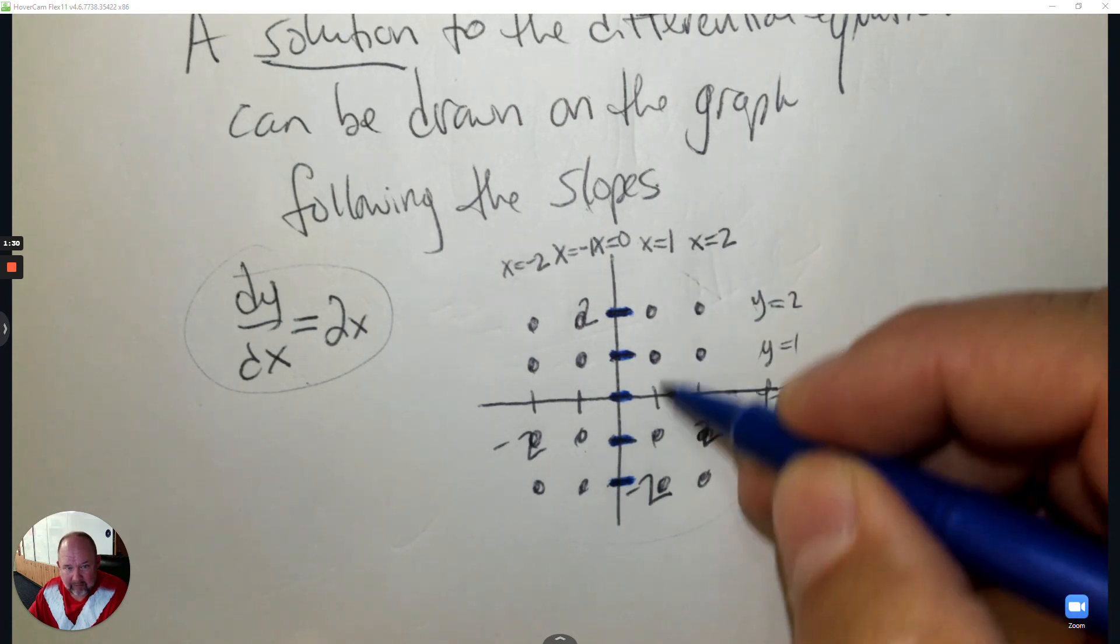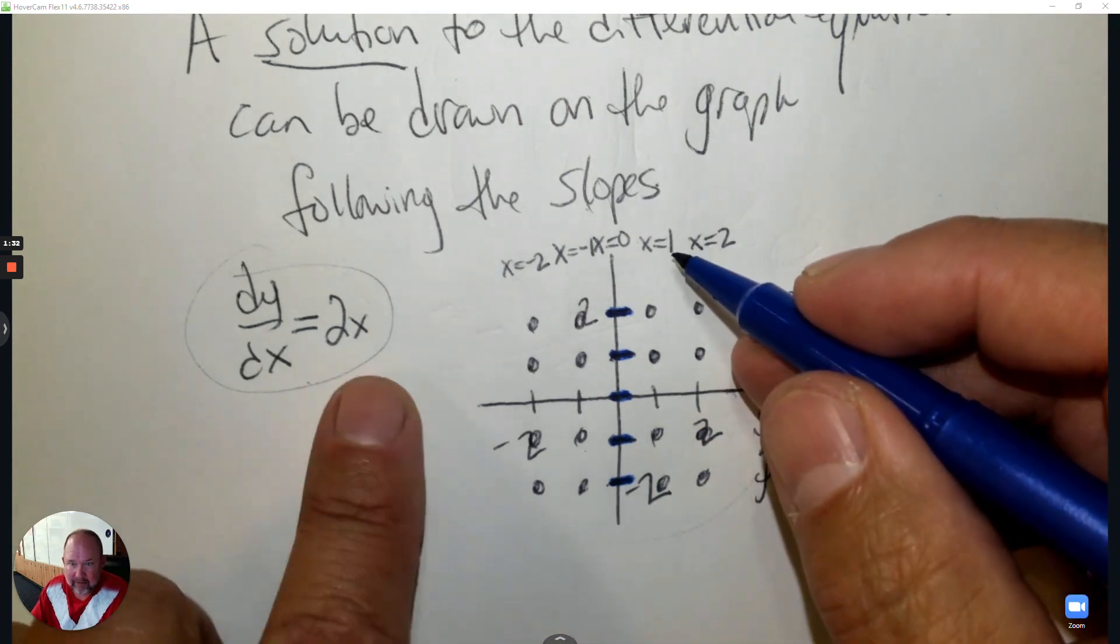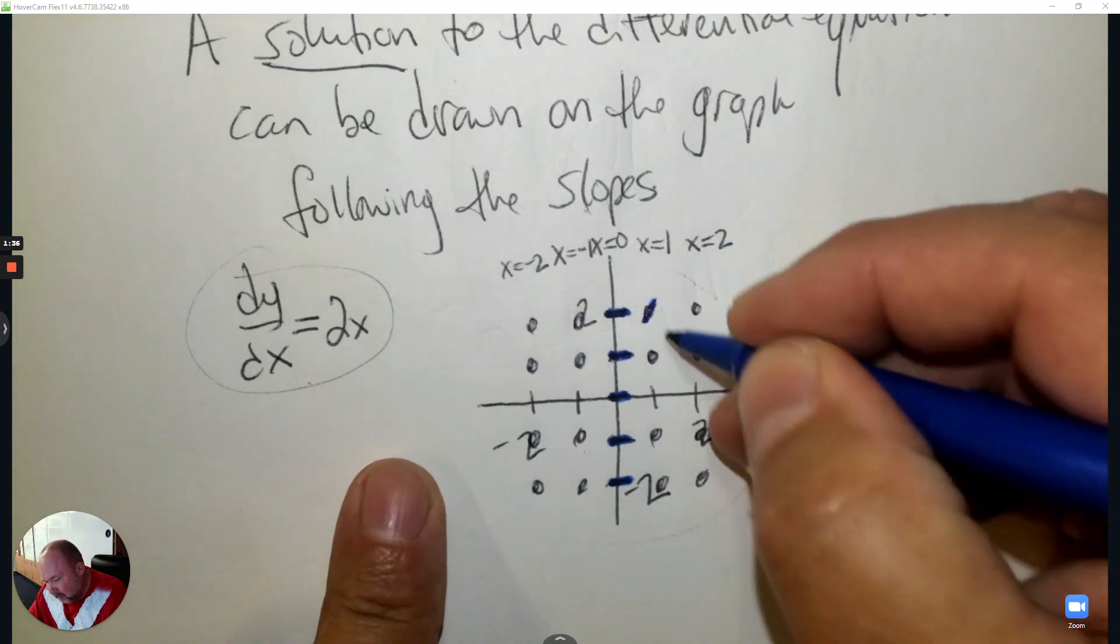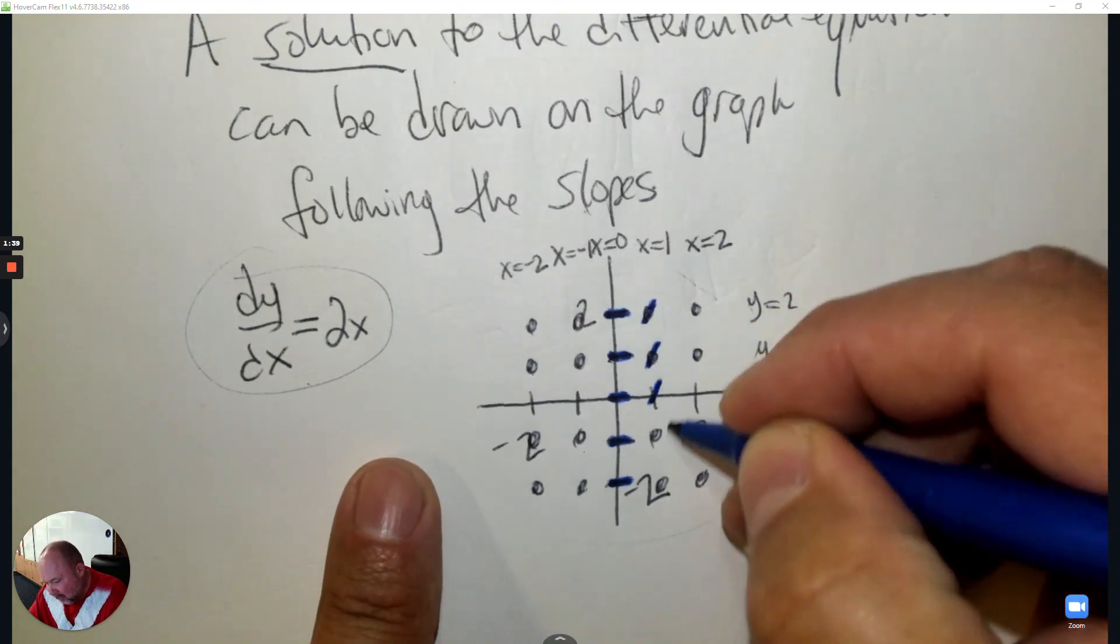Then if I go to 1, every point where the x coordinate is 1, I plug it in: 2 times 1, that gives me a slope of 2. So I estimate that slope of 2.